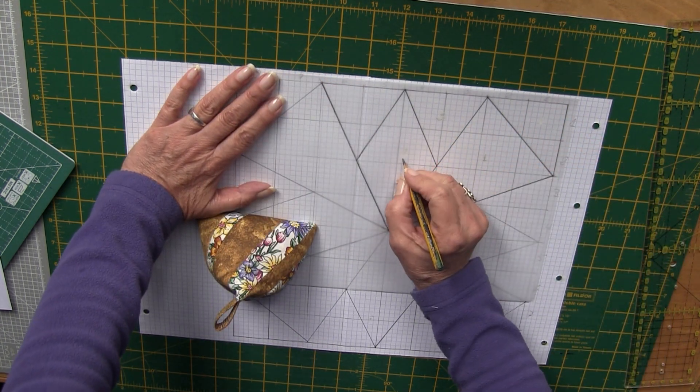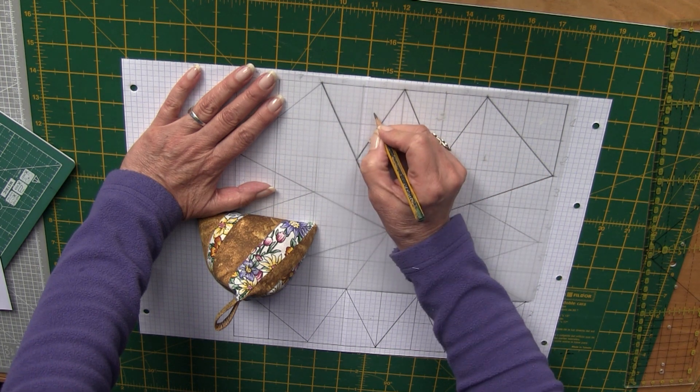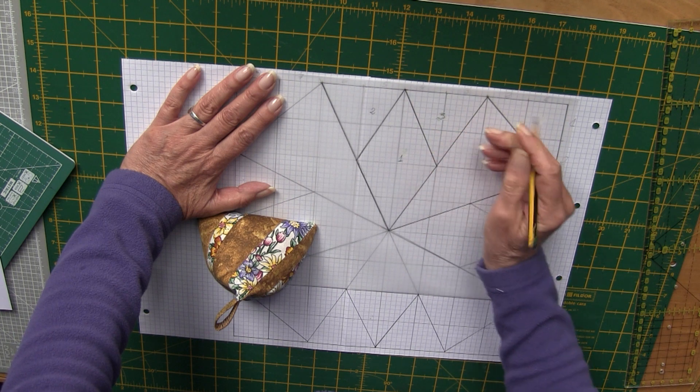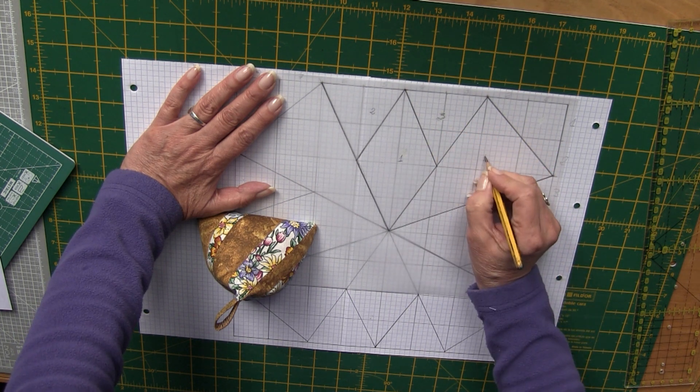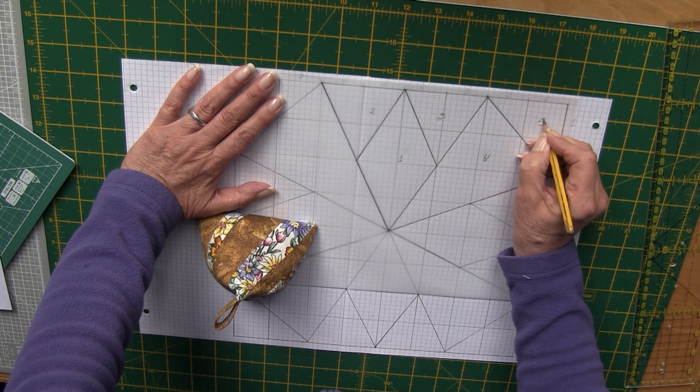Este es el 1, el 2, el 3, luego le unimos este que es el 4, y al final este de aquí que es el 5.